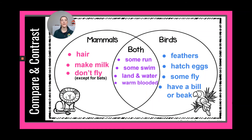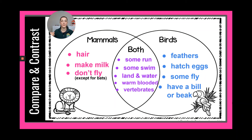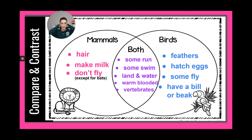From the BrainPop video: both mammals and birds are warm-blooded, meaning they regulate their own body temperature. And the very last shared trait — they are both vertebrates. Vertebrates means they have a vertebrae, which is your spine — the long spinal column that goes from the base of your head all the way down to your tailbone.